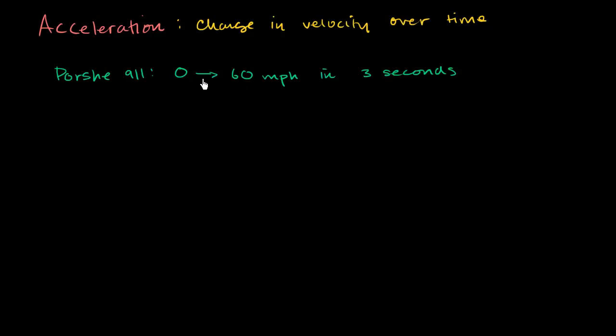So although officially what they're giving you right here are speeds, because they're only giving you magnitude and no direction, you can assume that it's in the same direction. I mean, we could say 0 miles per hour to the east to 60 miles per hour to the east in 3 seconds. So what was the acceleration here?